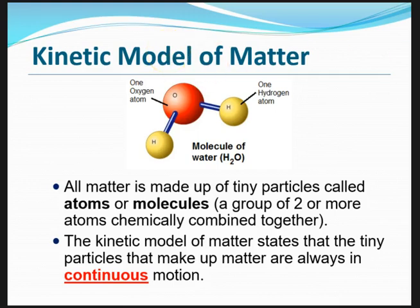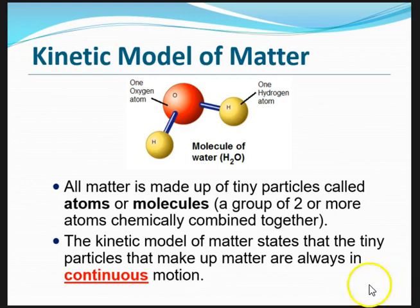To start this lesson on internal energy, let me bring you back to the chapter on kinetic model of matter. Let's recall that all matter is made up of tiny particles called atoms or molecules. Molecules are basically a group of two or more atoms chemically combined together. The kinetic model of matter states that tiny particles that make up matter are always in continuous motion. They are always moving and therefore, if they are moving, they must have some form of energy called kinetic energy.